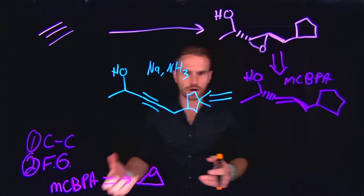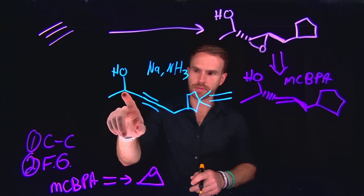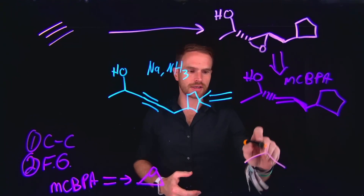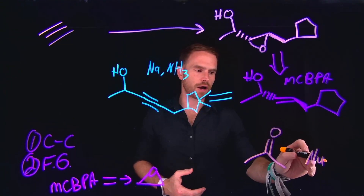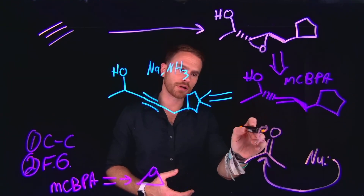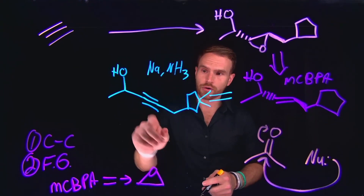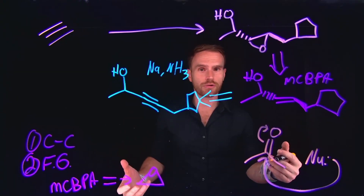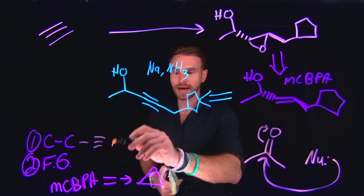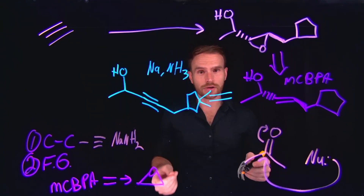At this stage, the next functional group transformation that I see is the presence of this alcohol. Importantly, it is connected to a carbon that is adjacent to an alkyne. And previously, we have learned about nucleophilic addition reactions, where in the presence of a nucleophile, you can generate new alcohols by doing nucleophilic acyl substitution. I know of a method where I can turn an alkyne into a nucleophile — that is one of those methods to generate new carbon-carbon bonds. In the presence of a strong base like NaNH2, I know that I can deprotonate an alkyne, and now it will act as a nucleophile.